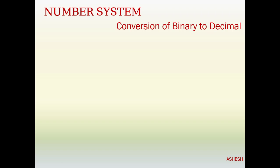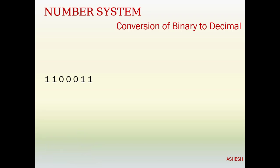Welcome to my channel ICT blog. Today we will learn conversion of binary to decimal. Here we have some binary numbers to convert to decimal. To do that, we have to imagine some numbers on top of the binary number — let's imagine 0, 1, 2, 3, 4, 5, 6. These are our imaginary numbers. You should write them with a pencil so you can erase them at the end.